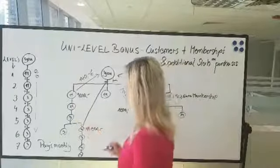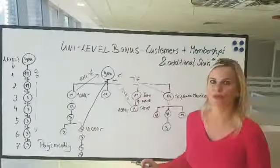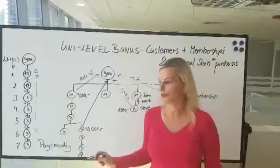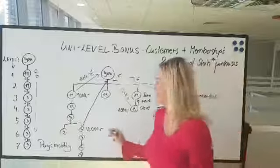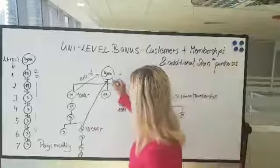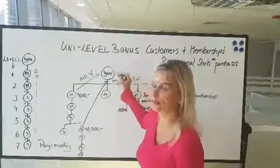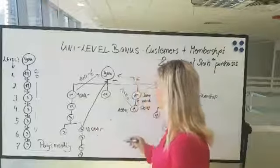So in your fourth level somebody purchases 10,000 euros store, which people are doing because we have higher packages. Let's say you purchase this for 10,000 euro. Well you're going to make 3%. How much is 3% of 10,000 euro? It's going to be 300 euro which you make.